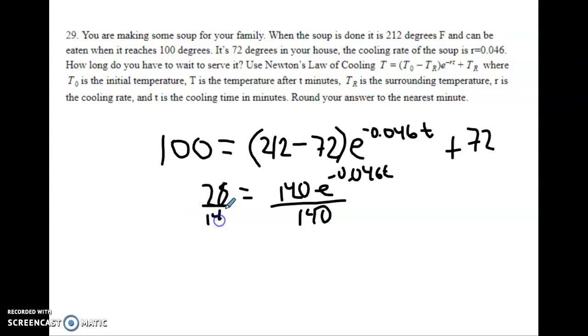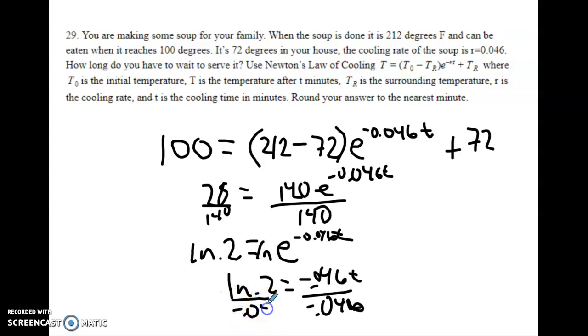And, then we have this e to the negative 0.046T. We're going to take the natural log of both sides to get rid of the e. So, we have natural log of 0.2 equals negative 0.046T. Then, if I divide by that negative 0.046 both sides, I just grab a calculator and divide that out. And, the calculator helps me find the answer.